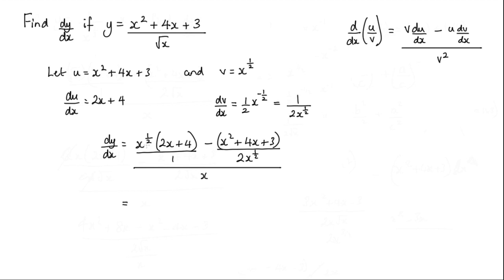So I'm multiplying the numerator by 2x^(1/2). I'll have the 2 times x^(1/2) multiplied by x^(1/2). If you recall, we add the powers, so that'll just give me 2x, and then I've got 2x + 4. Minus this bracket here, so that'll be minus (x² + 4x + 3) in brackets. Now that whole thing is over 2x^(1/2), and all of that itself is over x.